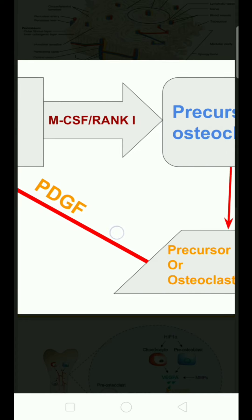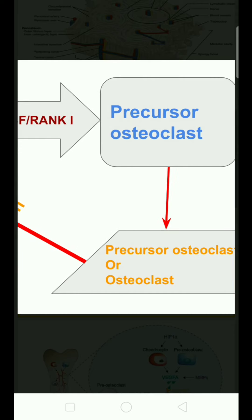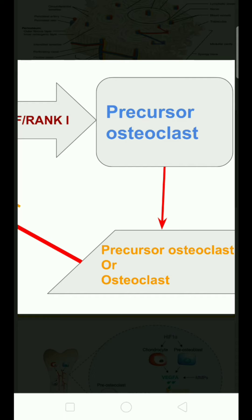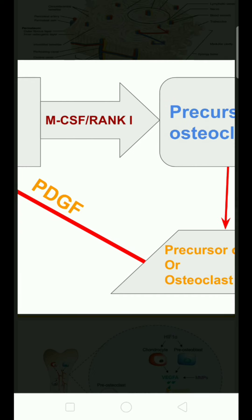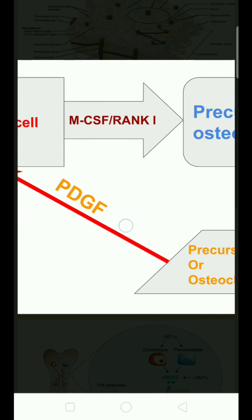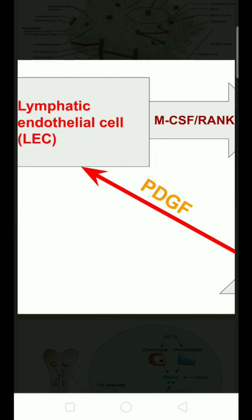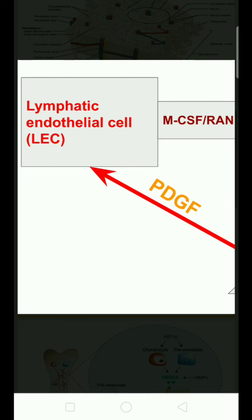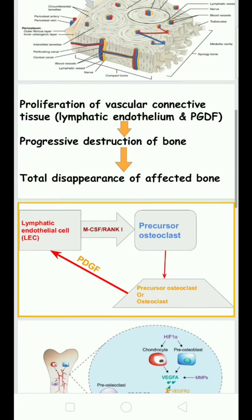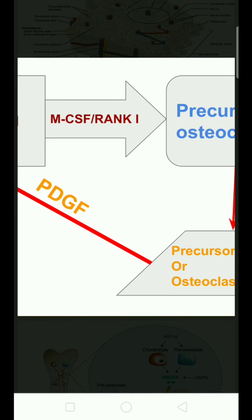This happens because lymphatic endothelial cells stimulate MCSF and RANKL, which stimulate precursor osteoclasts. These precursor osteoclasts group together to form osteoclasts. The osteoclasts synthesize platelet-derived growth factor (PDGF), which in turn stimulates the lymphatic endothelial cells — creating a cycle.